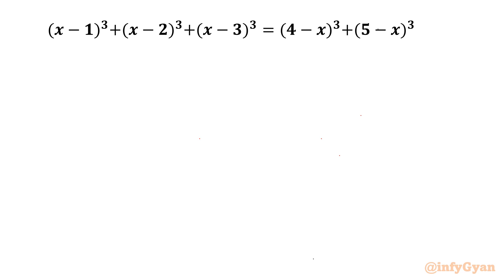Welcome back to Infigyan friends. Today in this video we are having one very interesting cubic equation for which we will find out all three solutions. I will showcase two different ways to solve this problem. The equation is (x−1)³ + (x−2)³ + (x−3)³ = (4−x)³ + (5−x)³. Let me begin with Method 1, which is the method without substitution.